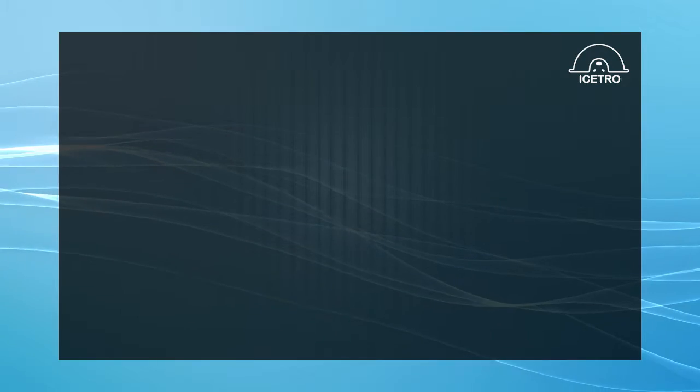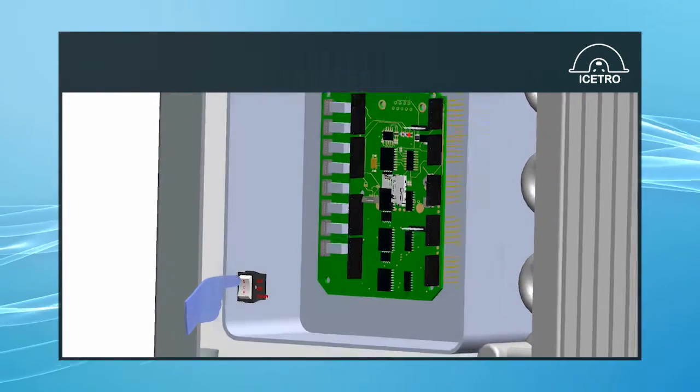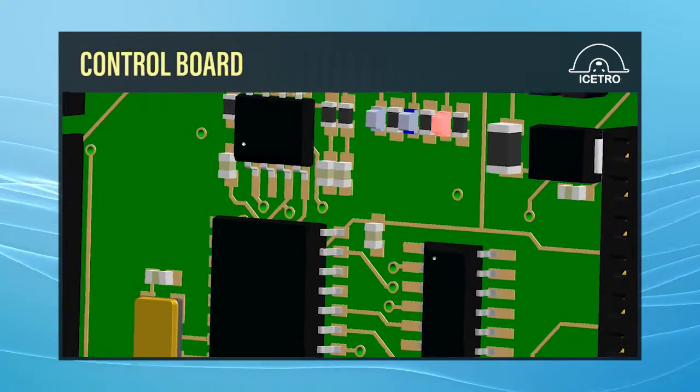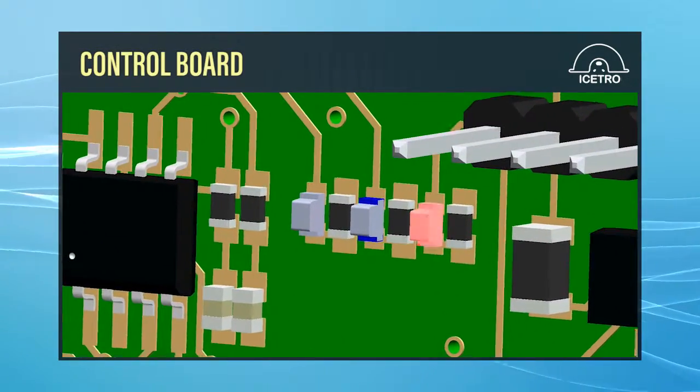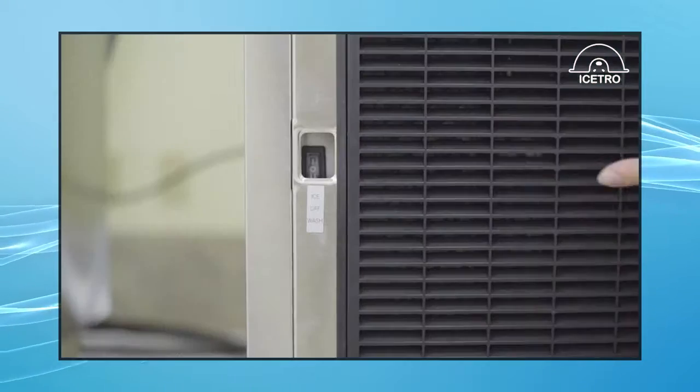To begin the sequence of operation, turn the switch on to power. When the machine is first powered on, the LED light on the control board will begin to blink rapidly. Then turn the ice off wash switch to the ice position.